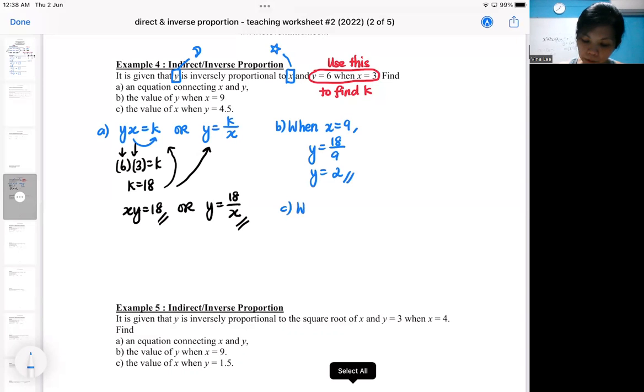Same thing. If you are interested in the value of x when y is 4.5, you can choose which one you want to put it into. In this situation, maybe you want to put it here. You get 4.5x equal to 18, and then you divide over.